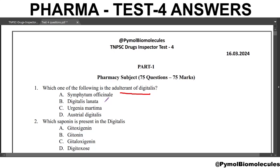Next question: which saponin is present in digitalis? The answer is Gitonin. Two saponin glycosides are present in digitalis. The first one is Gitonin and the other one is Digitonin.